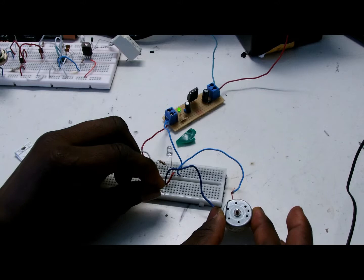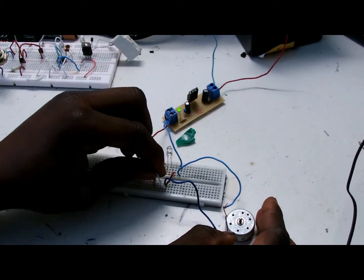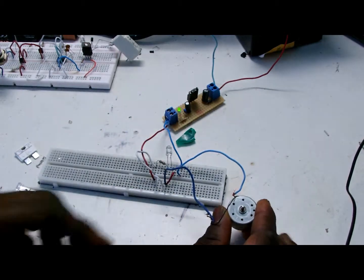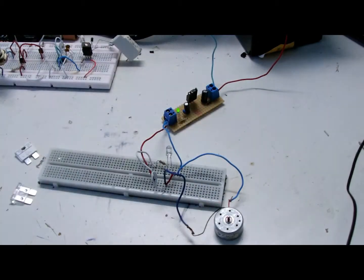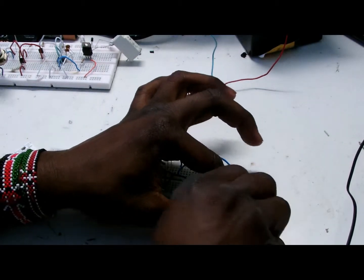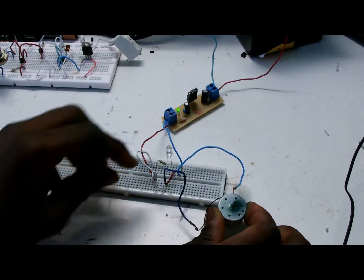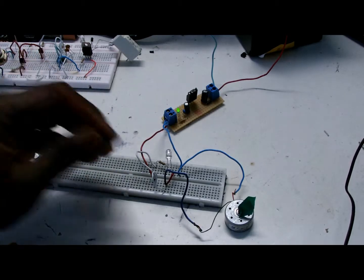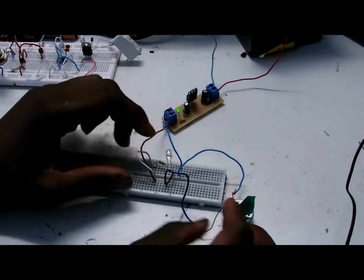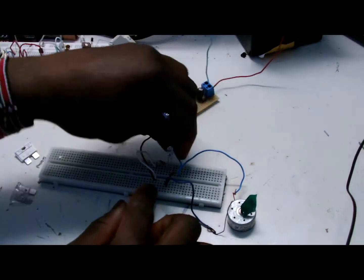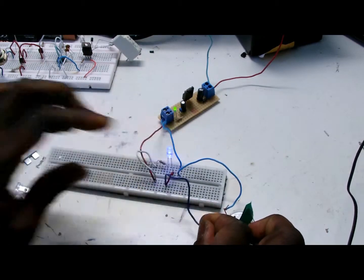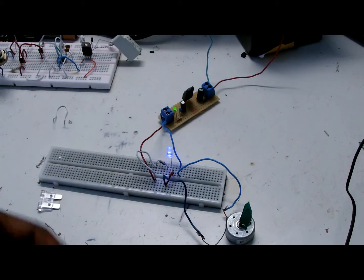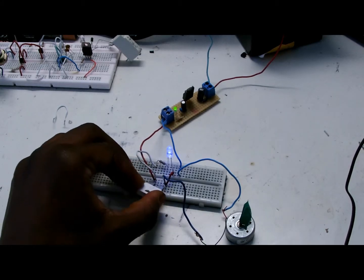You see, this means if there's continuity between the fuse terminals, the LED doesn't light, indicating the fuse is okay. If I remove the continuity, the LED should light. So if our fuse is burned up, it's going to indicate by the LED lighting.